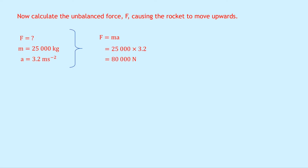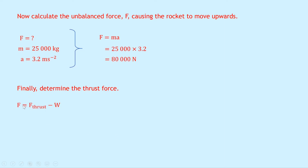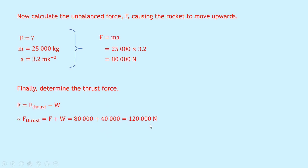With the unbalanced force of 80,000 Newtons upward and the weight downward, we can find the thrust. The unbalanced force equals thrust minus weight, so rearranging: F thrust equals F plus W, which equals 80,000 plus 40,000, giving a final answer of 120,000 Newtons.